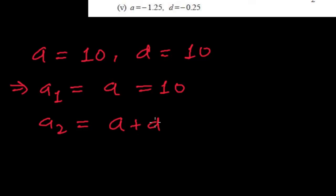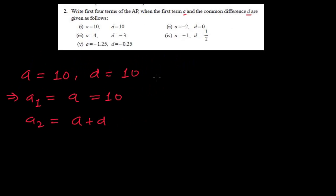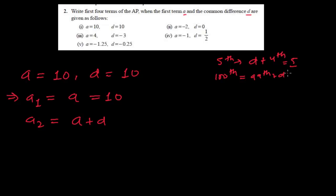We have already learned about common difference and the first term in the introduction video of arithmetic progression — that in an AP, if you just add the common difference to the preceding term, you will get the next term. For example, if you want the fifth term, just add the common difference to the fourth term. If you want the hundredth term, just add the common difference to the 99th term. If you want the thousandth term, add the common difference to the 999th term. So it is simple.